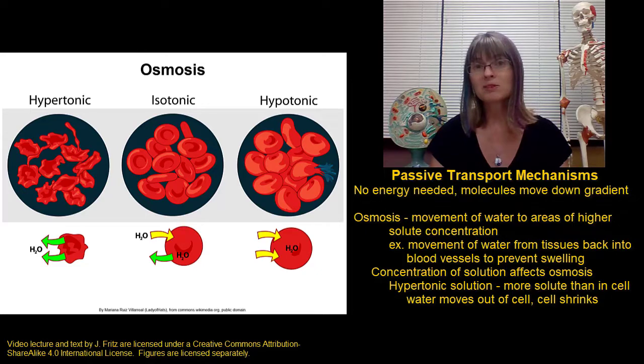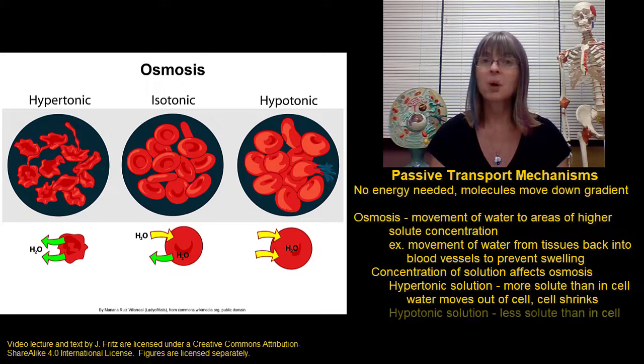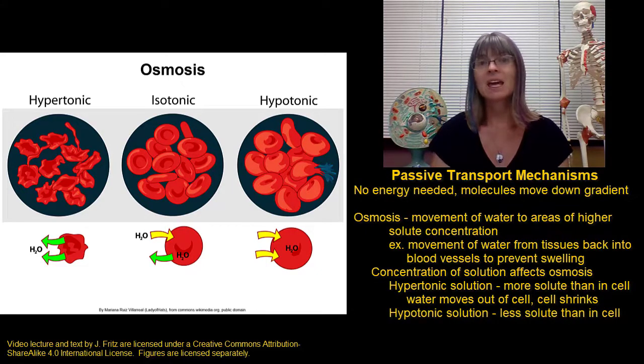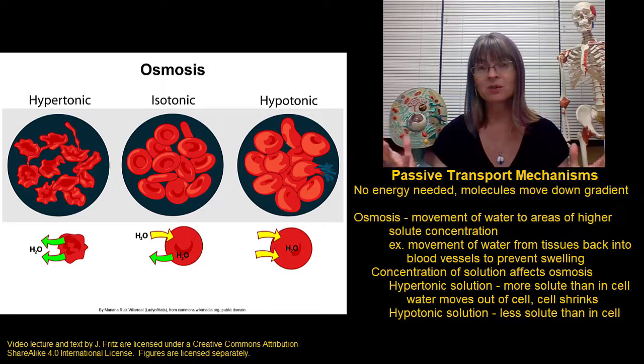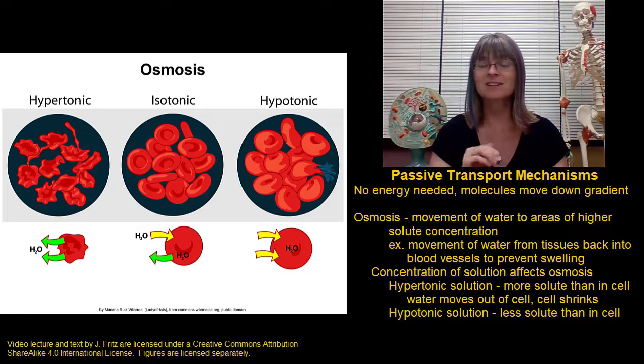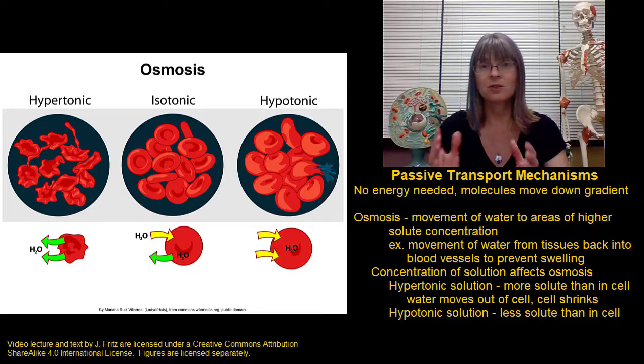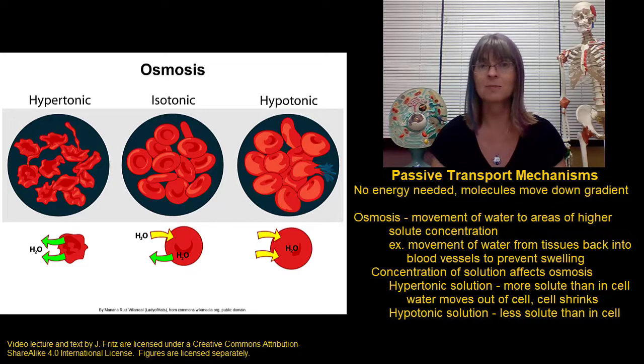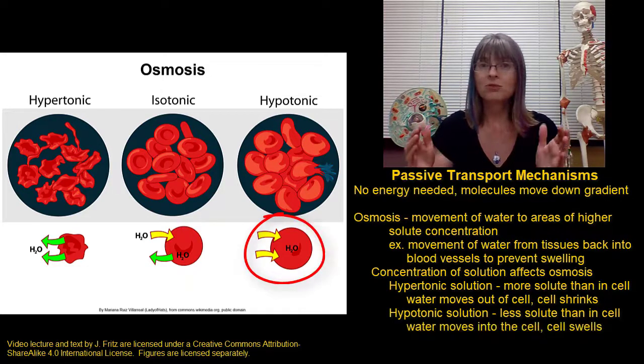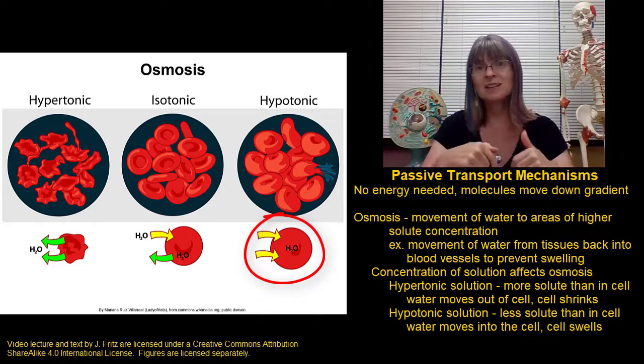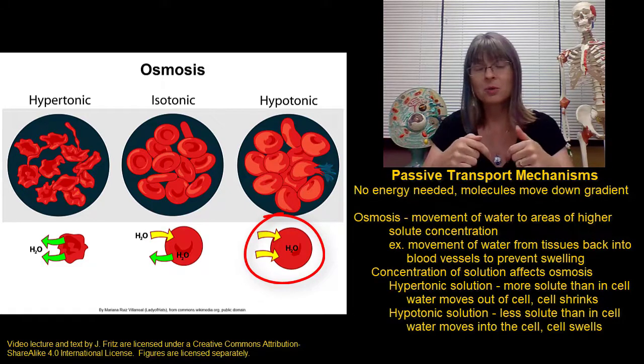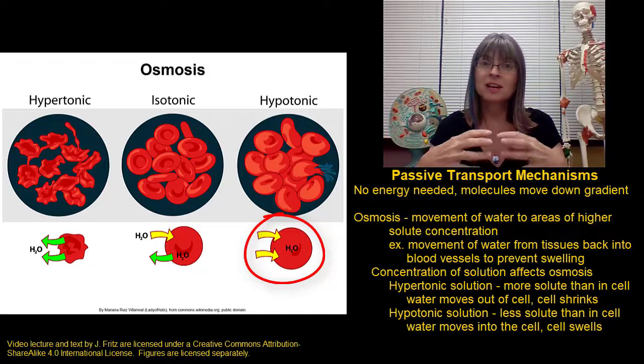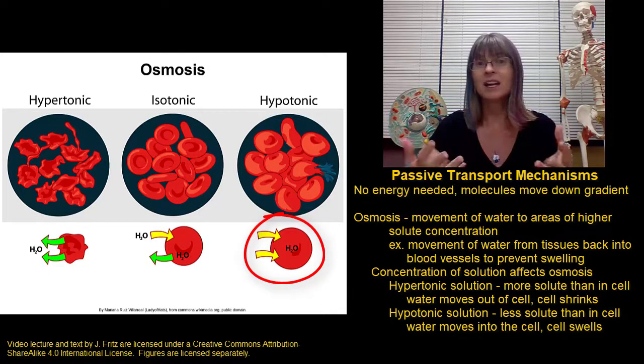Let's consider the opposite situation, where we put a cell in a hypotonic solution. A hypotonic solution has less solute in the solution than is inside the cell. This is what would happen if we took a cell and put it in plain water. Water doesn't have solute in it, so there would be very low solute outside the cell, and a much higher level of solute inside the cell. In this case, water wants to move from the outside to the inside of the cell, where solute is more concentrated. As water moves into the cell, the cell can swell and even burst.